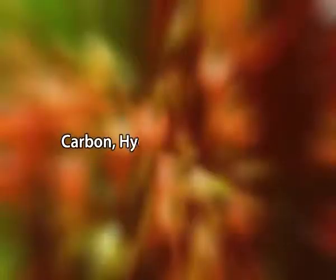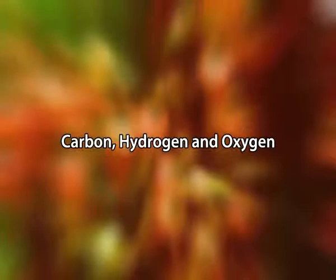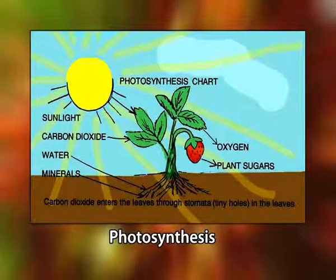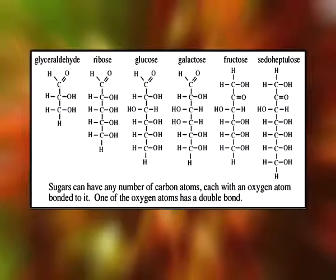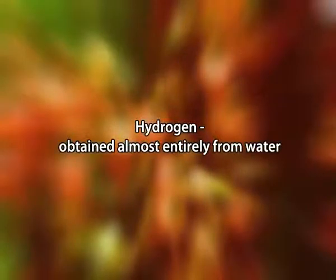First, we discuss carbon, hydrogen, and oxygen, as their deficiency and toxicity symptoms are similar. Carbon forms the backbone of many plant biomolecules including starch and cellulose. It is fixed through photosynthesis from atmospheric CO₂ and converted to carbohydrates that store energy. Hydrogen is necessary for building sugars and is obtained almost entirely from water.